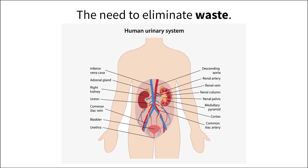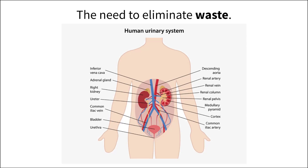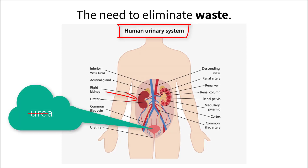The human body produces waste in many forms. While there are different organs that eliminate different types of waste, the urinary system, and specifically the kidneys, plays an unparalleled role in the elimination of specific types of waste, like urea, which is produced from the breakdown of amino acids.